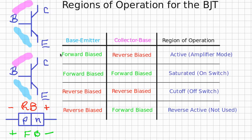In the region of operation used for amplification, known as active, the base-emitter junction is forward biased and the collector-base junction is reverse biased. So minority carriers in the base, which came from the emitter, mostly flow on to the collector.